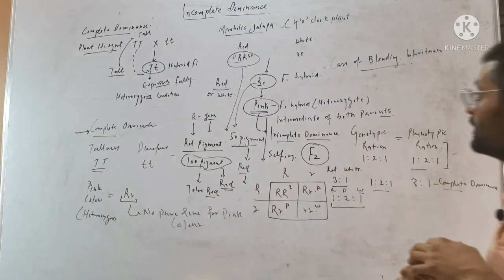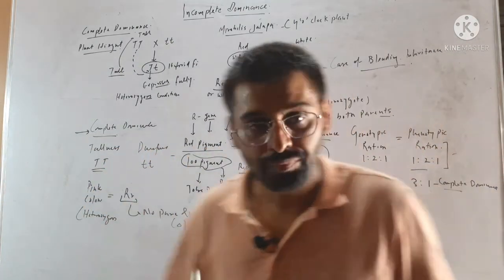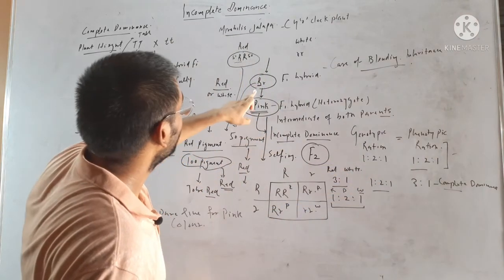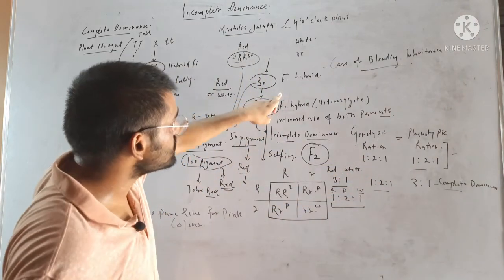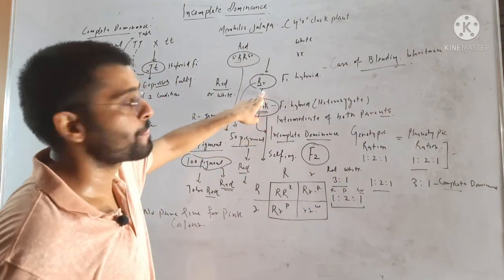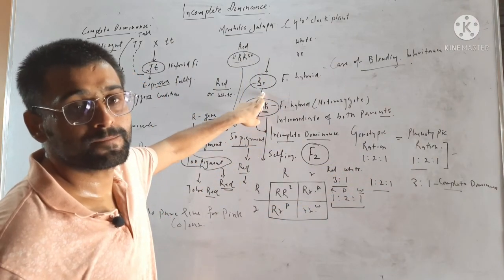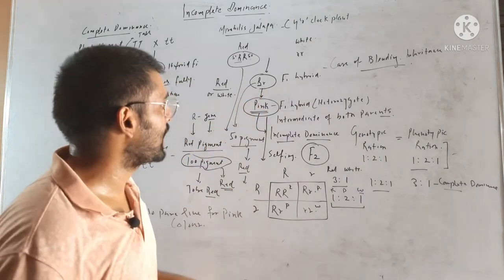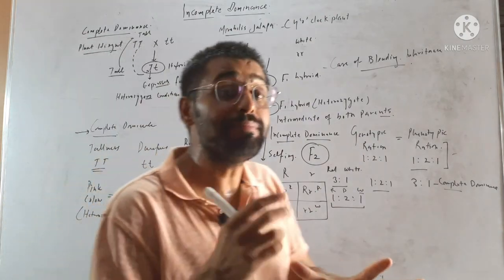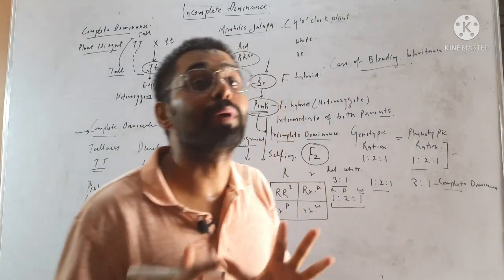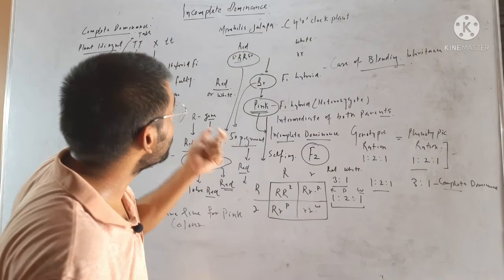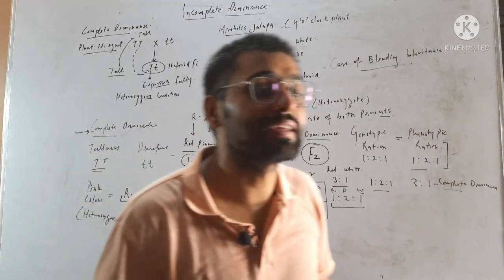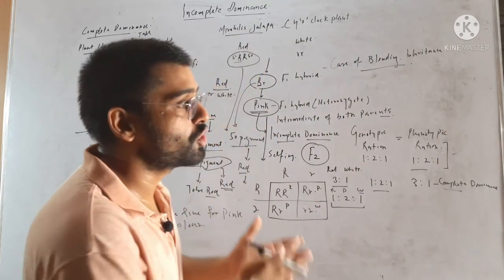So, incomplete dominance is when a heterozygous genotype produces a phenotype that is intermediate of both parents, meaning neither allele is expressing itself fully.